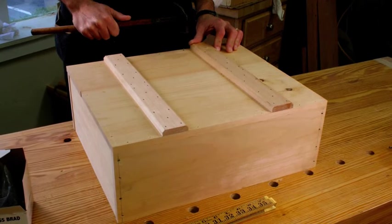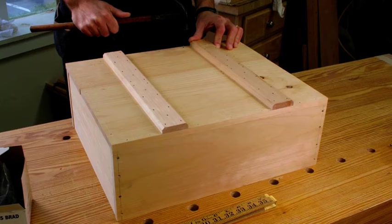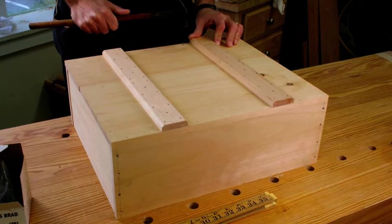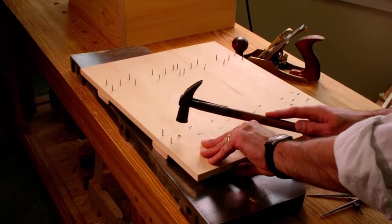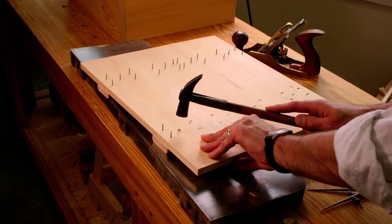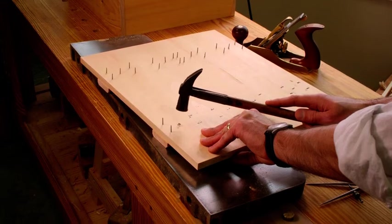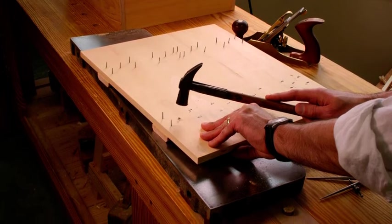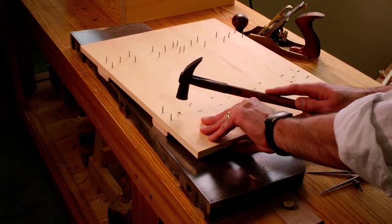Notice how the bottom overhangs the case a little bit. We're going to trim all of these proud edges with a smoothing plane. Here I'm preparing the top of the packing box and I'm clenching the top piece on an old table saw wing which is a real fast way to get the job done.